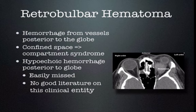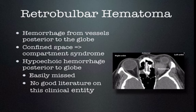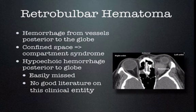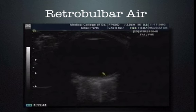Retrobulbar hematoma is blood that collects posterior to the globe. Because the posterior globe is surrounded by bone, any collection of blood there increases the pressure in that space — it's truly a compartment syndrome. As blood begins to collect, it pushes the globe out of the orbital cavity, putting traction on the optic nerve, causing ischemia and vision loss. This can be easily missed on ultrasound because the hypoechoic blood and vitreous are both hypoechoic. Use it with caution — suspect this clinically and proceed to CT scan if needed.